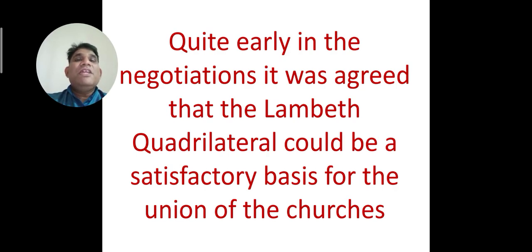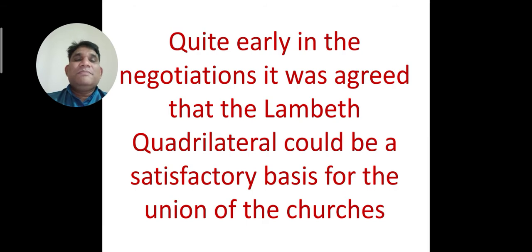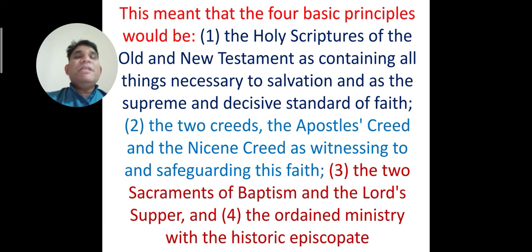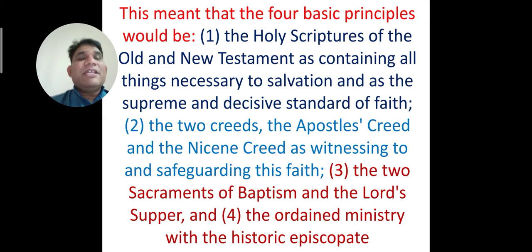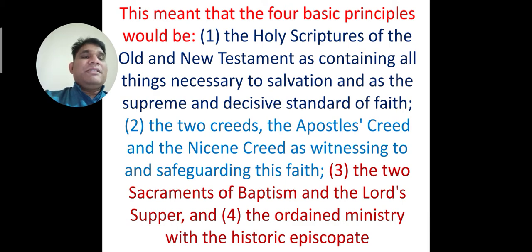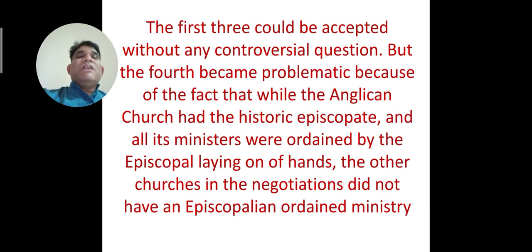The Lambeth Quadrilateral means that if all the churches agree on four issues, they can become one church. These four basic principles are: first, the Holy Scripture of the Old and New Testaments as containing all things necessary to salvation and as the supreme and decisive standard of faith; second, the two creeds — the Apostles' Creed and the Nicene Creed — as witnessing to and safeguarding the faith; third, the two sacraments of Baptism and the Lord's Supper; and fourth, the ordained ministry with the historic episcopate. The first three could be accepted without any controversy.